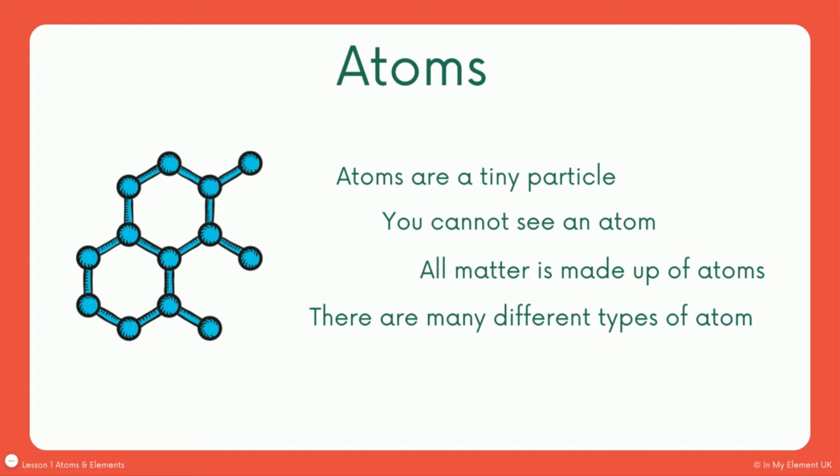So there are loads and loads of different types of atoms and then an element will contain just one type of atom. So this blue picture here could be representing one element because they're all the same, all the circles are the same. Remember that we represent these atoms by circles when we're drawing our particle diagrams.